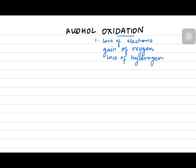So these are the three definitions for the word oxidation. When we deal with oxidation, we will first go through primary alcohol oxidation. A primary alcohol does not have many alkyl groups attached to the carbon with OH.